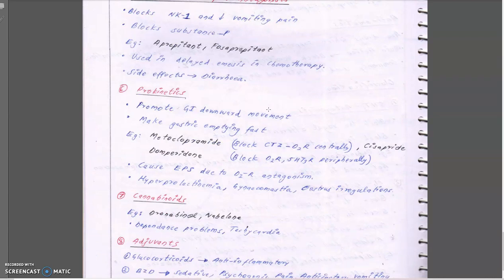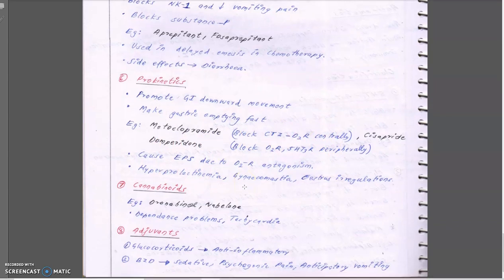Prokinetics increase gastrointestinal downward movement, making gastric emptying faster so there is no undigested food remaining. Metoclopramide and domperidone are mainly used as prokinetics. Metoclopramide has a 'C' in 'clopramide' indicating CNS-related action, while domperidone has peripheral action. Cannabinoids and adjuvants such as glucocorticoids are used for anti-inflammatory action, and benzodiazepines are used as sedatives and psychogenic pain-reducing drugs. Cannabinoids are not typically used here due to dependence problems and because they can also cause tachycardia.